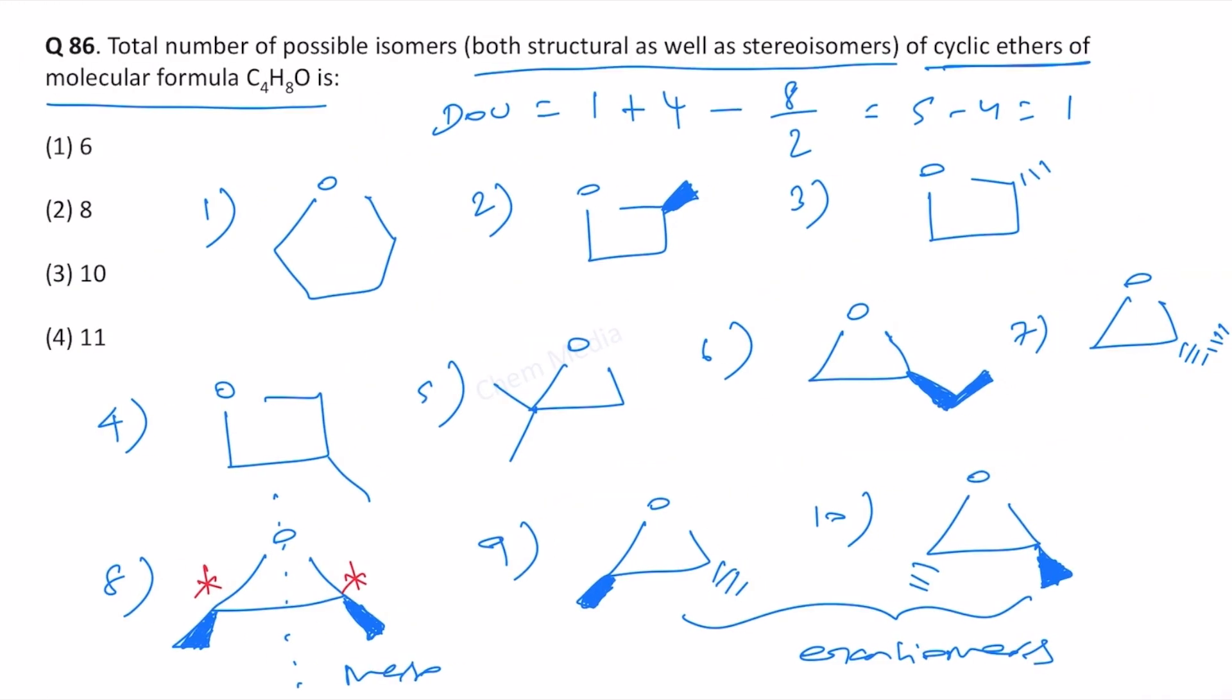Therefore the correct option is option three, 10 isomers. And by the way, this is also a meso compound, but these two are identical. This molecule and this molecule are identical. You shouldn't count this as one isomer. So in that way also one can make a mistake. And that's the reason I said this is one of the tricky questions.